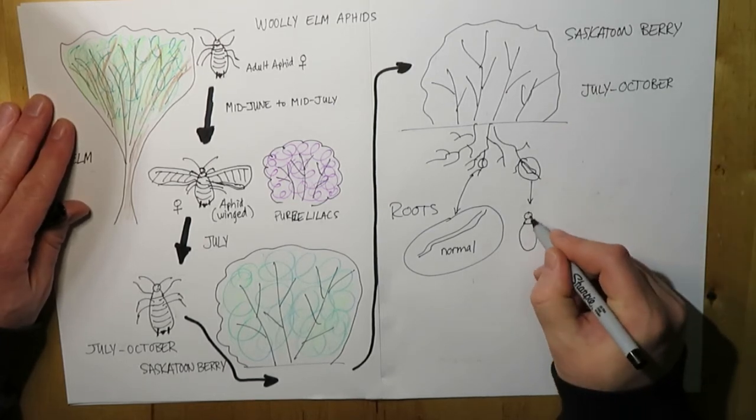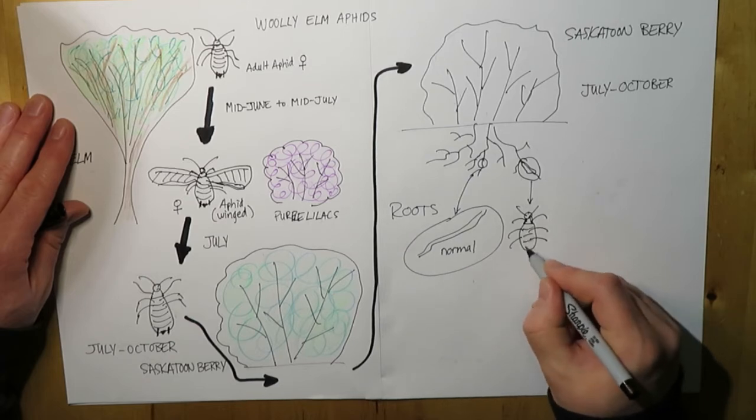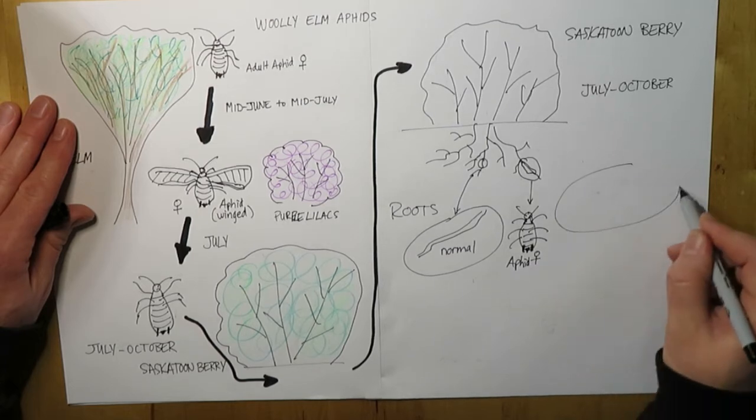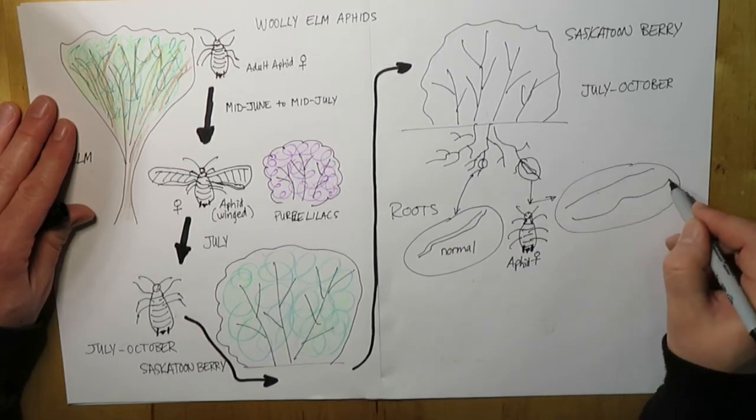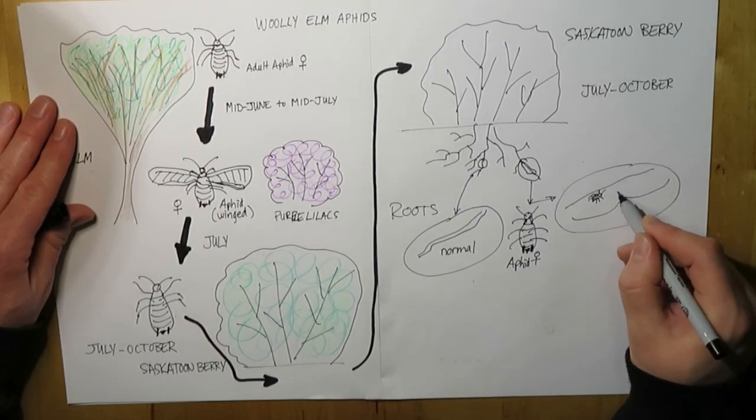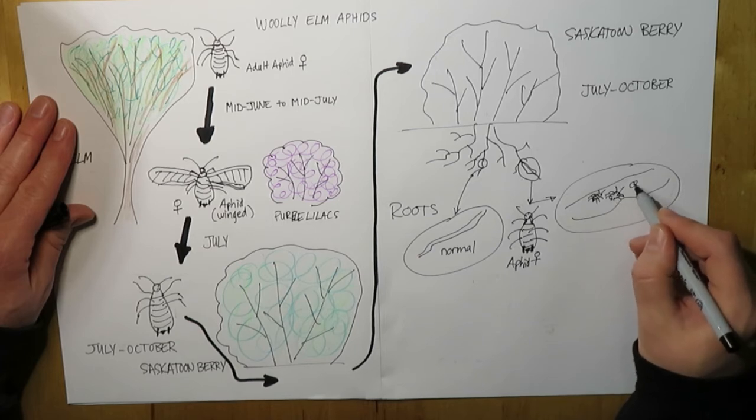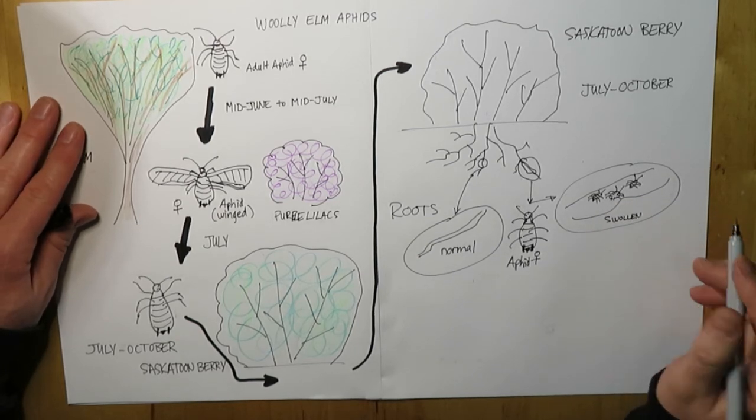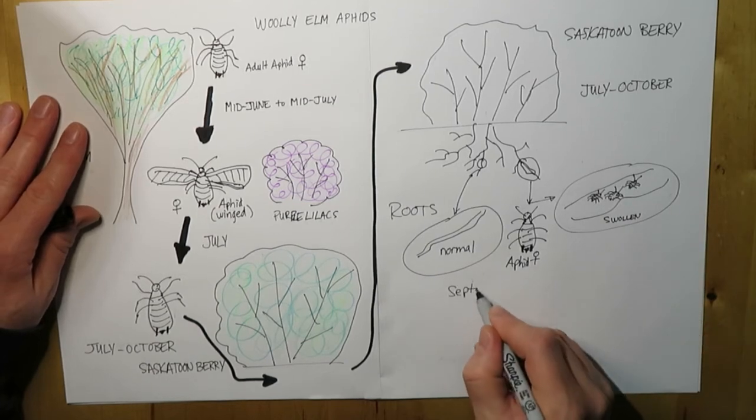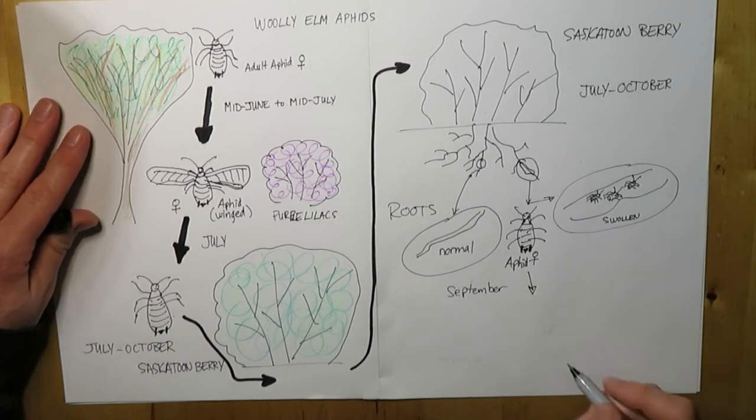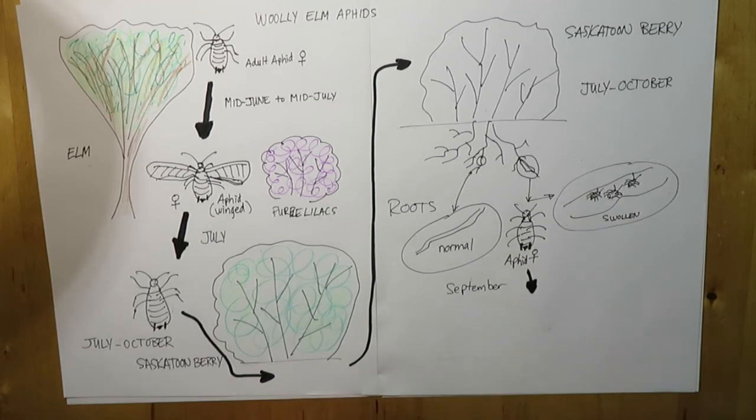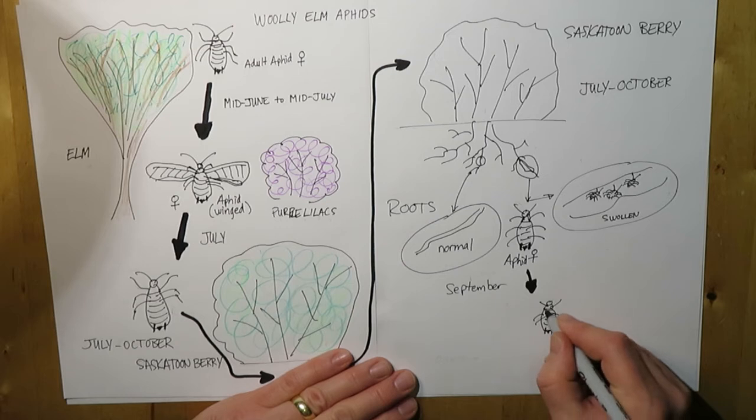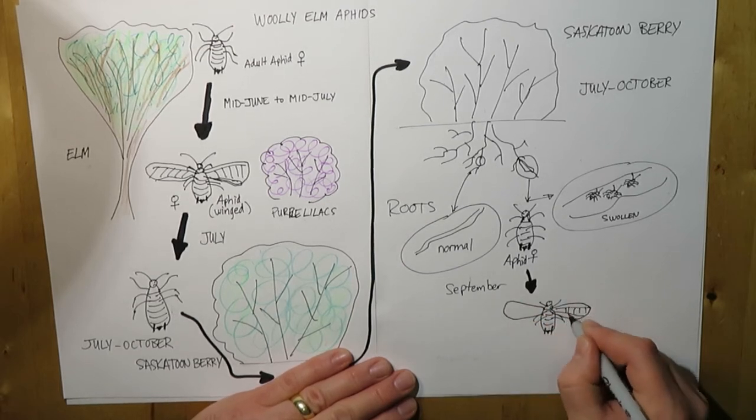And so what this will result in is you'll see above ground symptoms such as flagging, which is off-season color change, you'll see weakened plants. And this is a big problem for, of course, for the youngest plants. As an older plant has established four or five years old, it can handle things a little bit better. But the aphids feed upon that root and there'll be some woolly looking stuff as well as all the aphids that are feeding there, all female.